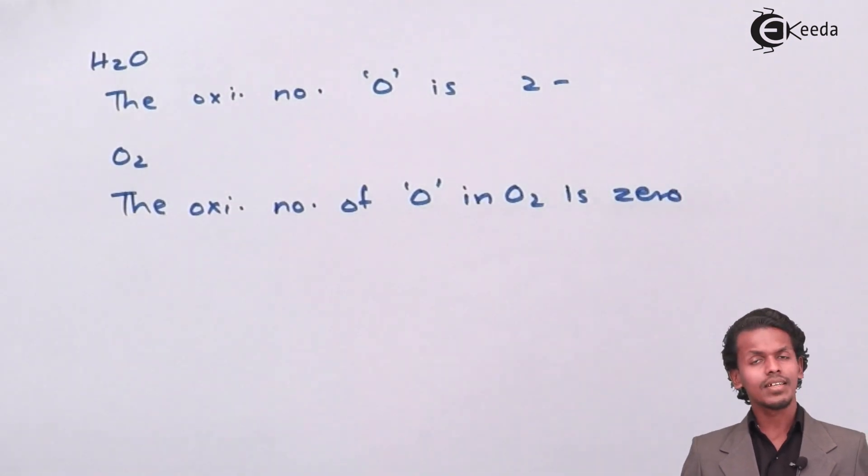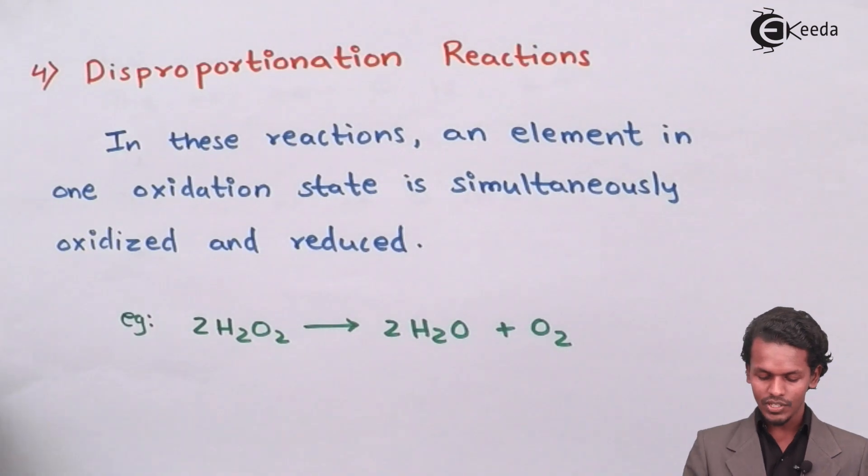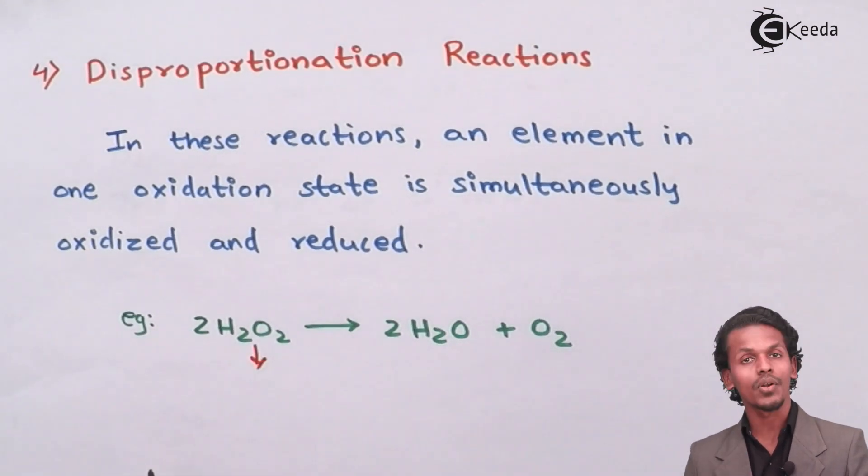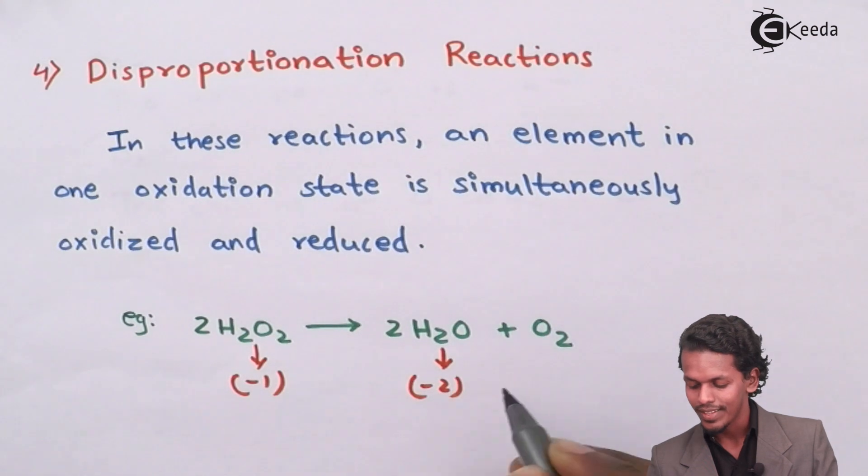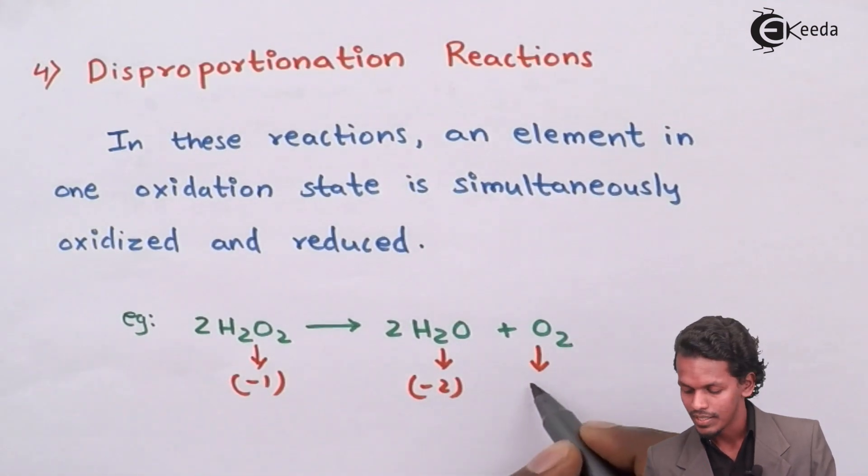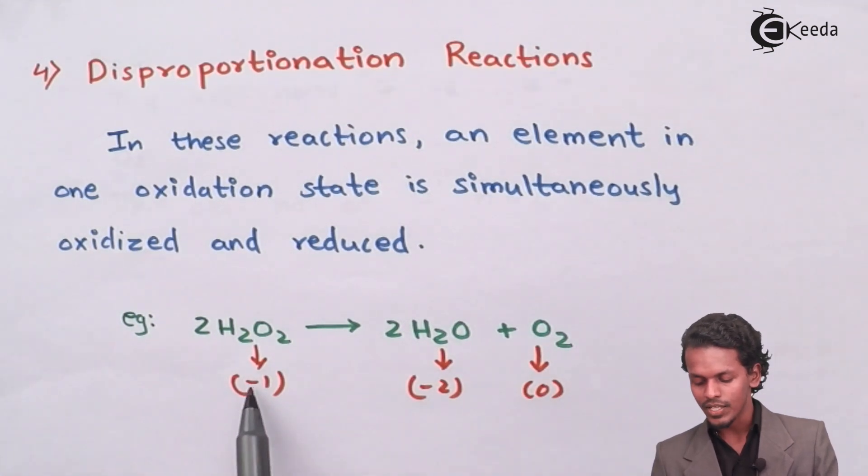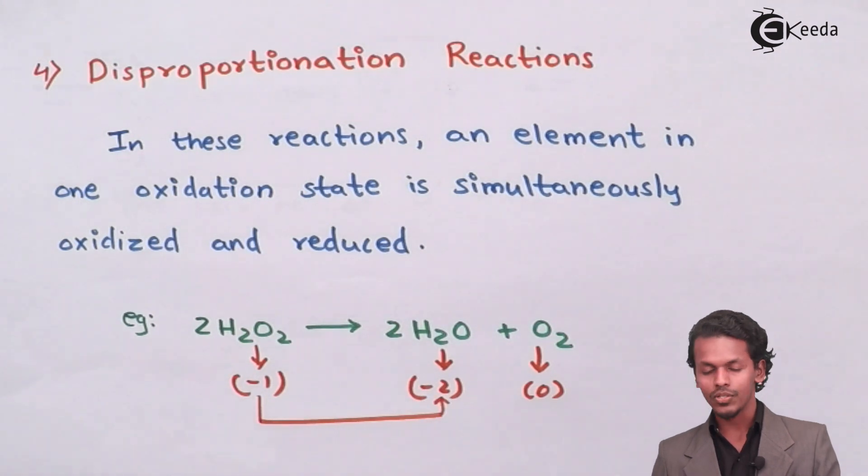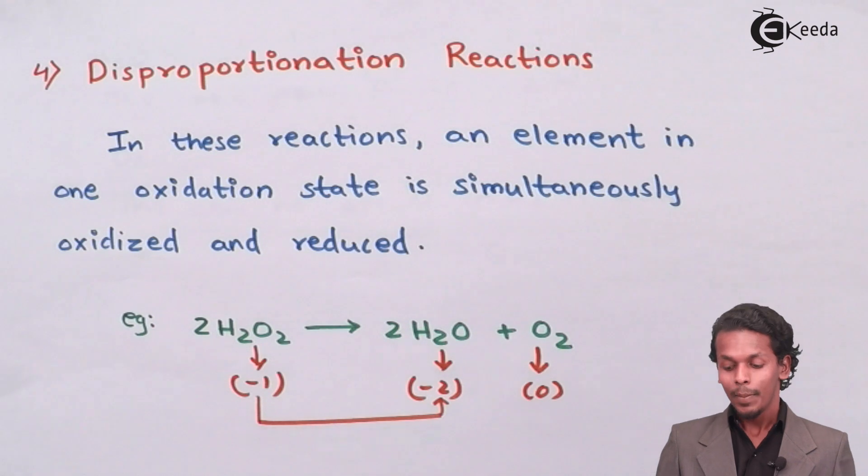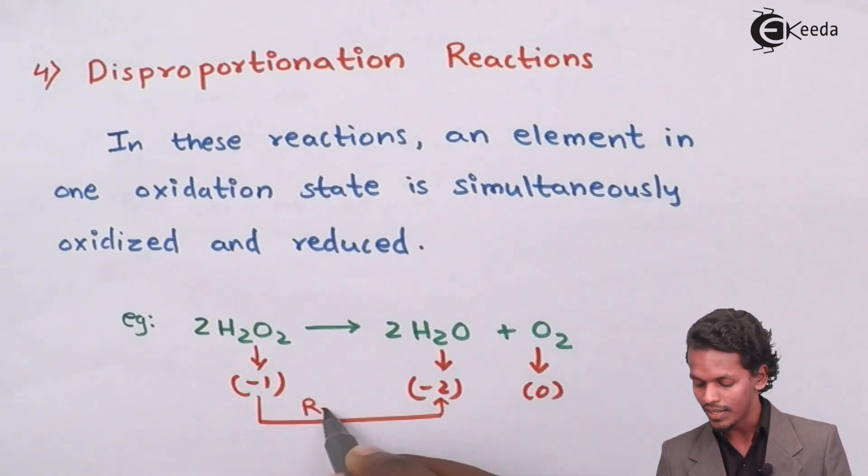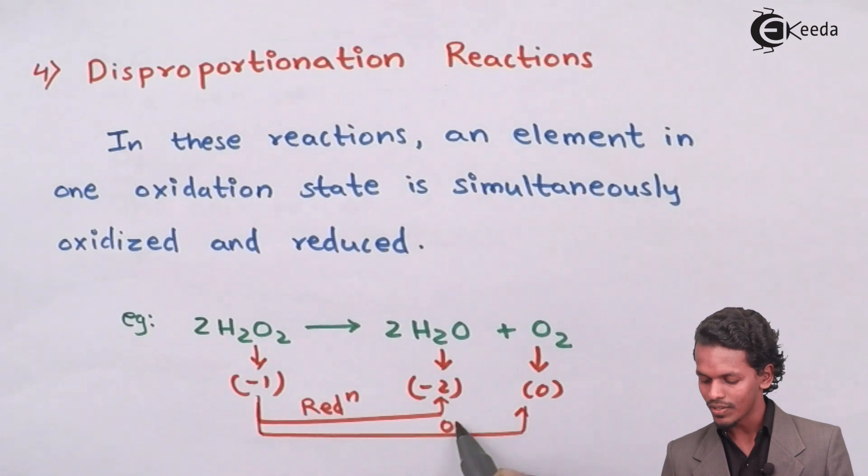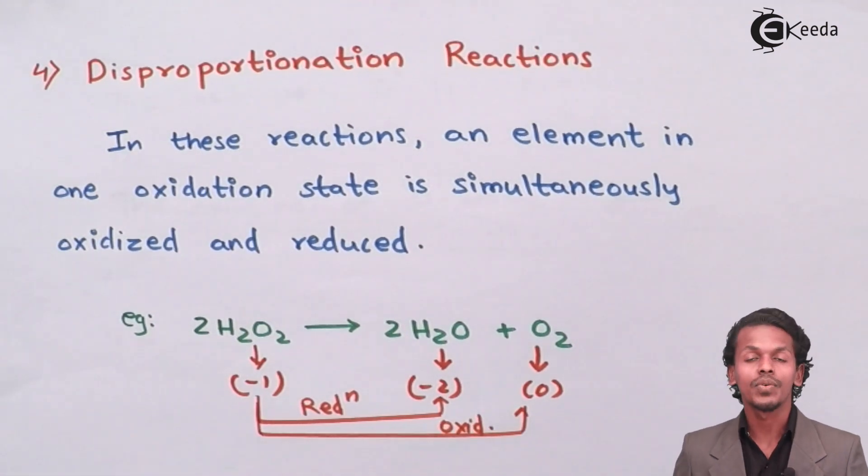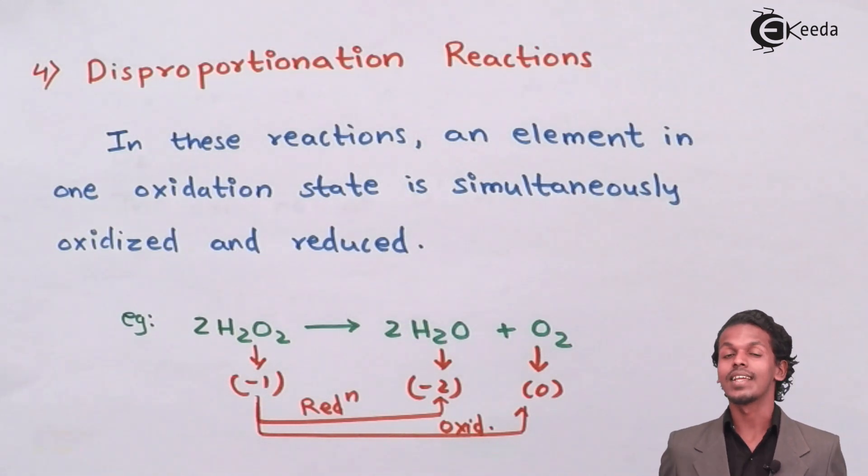So let us see whether the reaction is undergoing redox reaction or not. In H2O2, the oxidation number of oxygen is minus 1. In H2O, the oxidation number of oxygen is minus 2, while in O2, the oxidation number of oxygen is 0. So basically, this minus 1 is converted into minus 2, which only happens if electron is accepted. Means, in the same reaction, this oxygen atom is reduced. As well as, in the same reaction, this oxygen atom is oxidized from minus 1 to 0. So hence, this kind of reaction is known as disproportionation reaction.